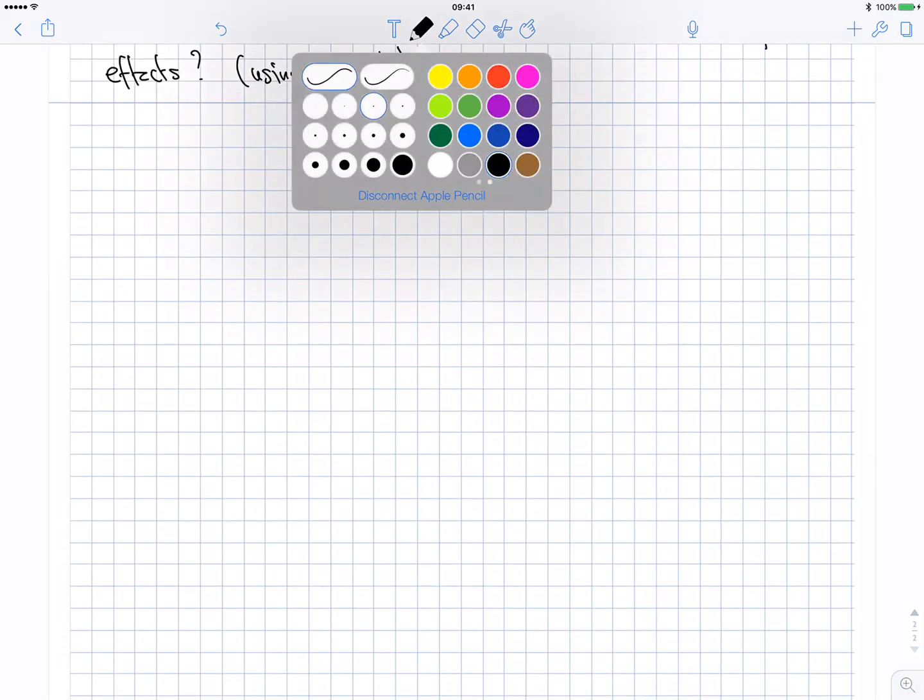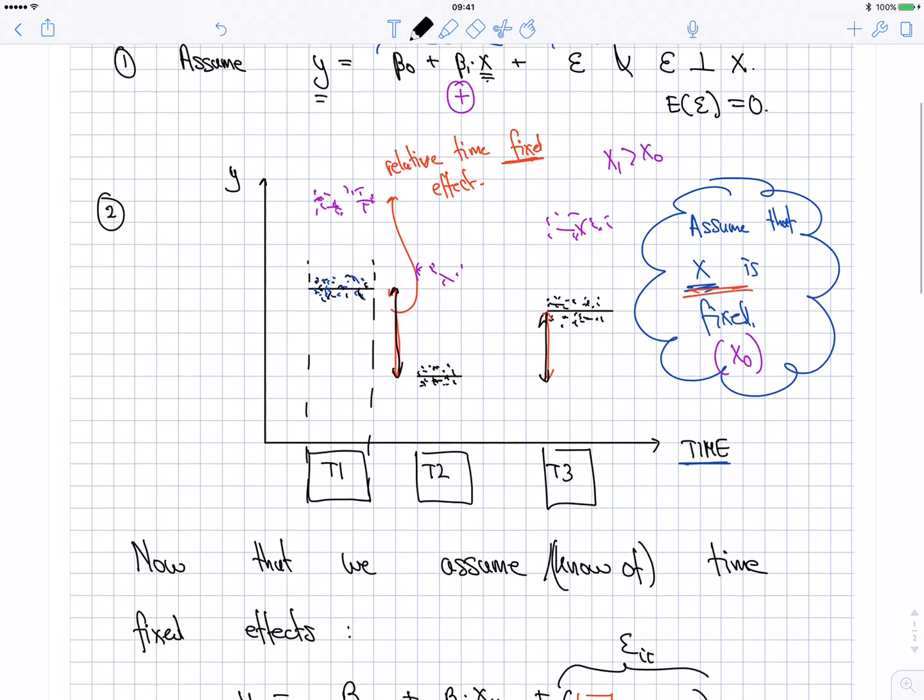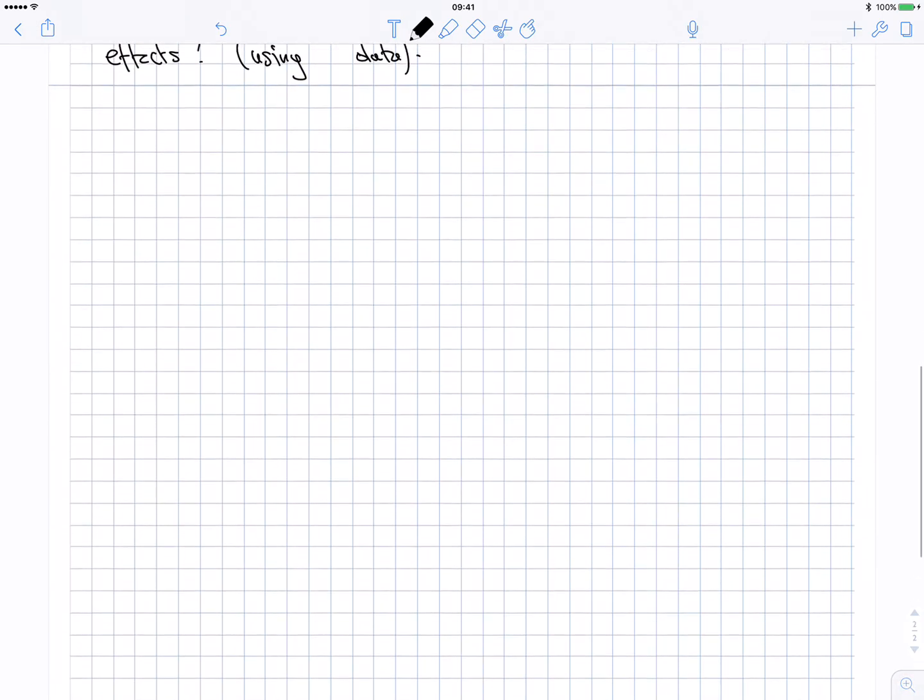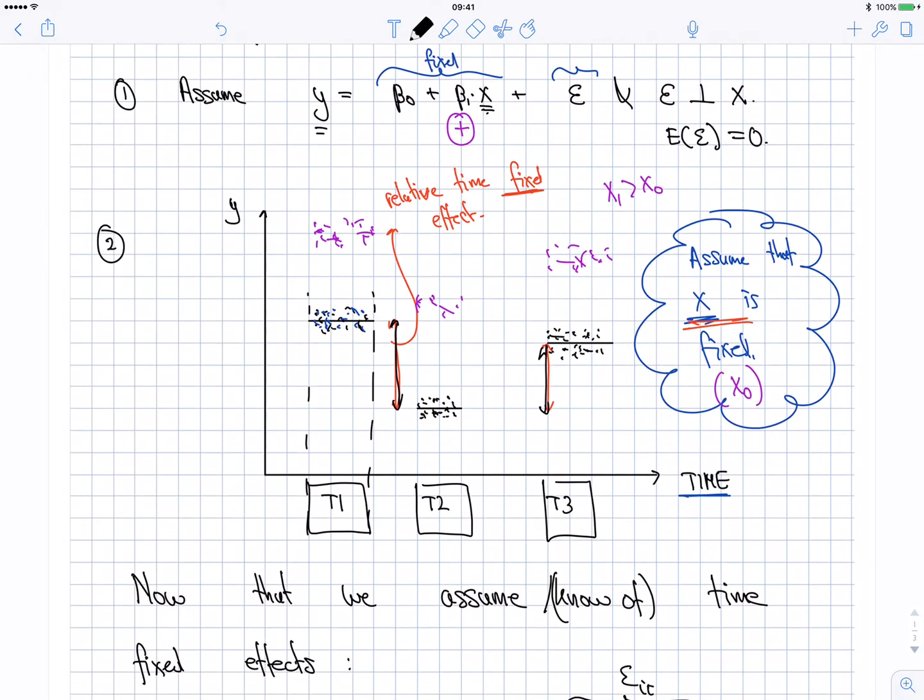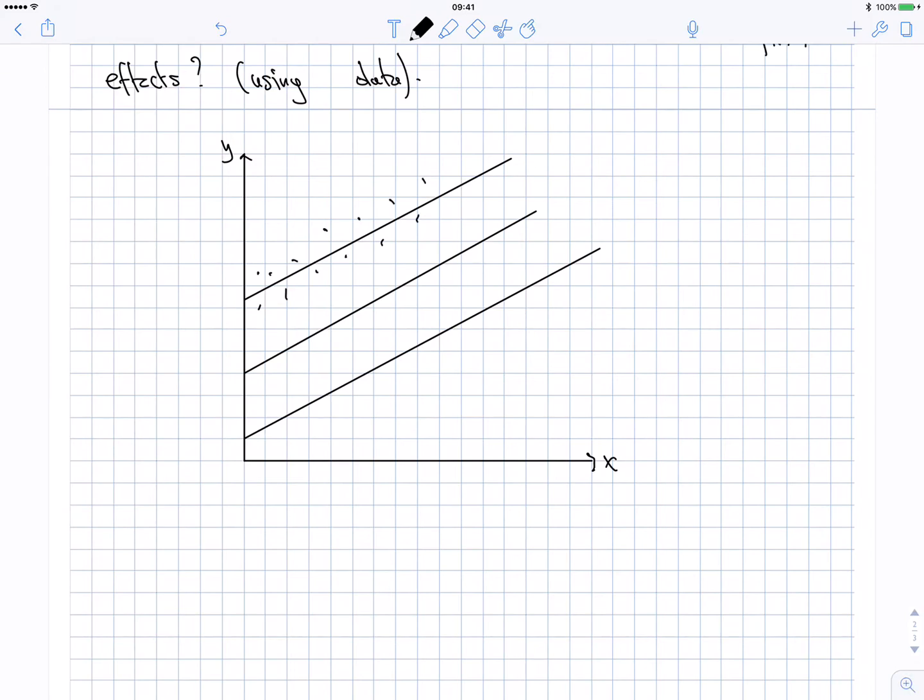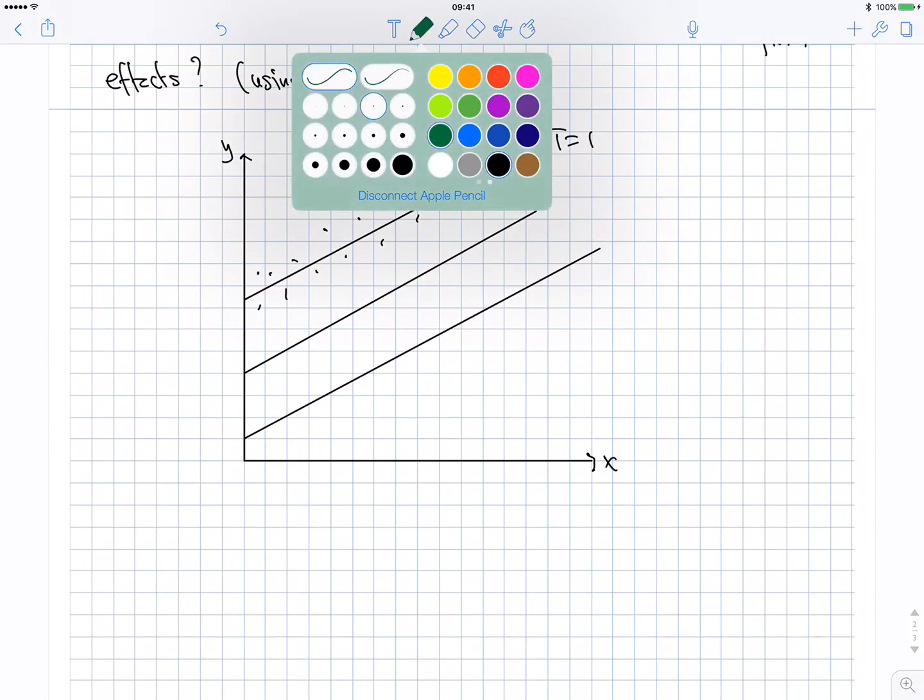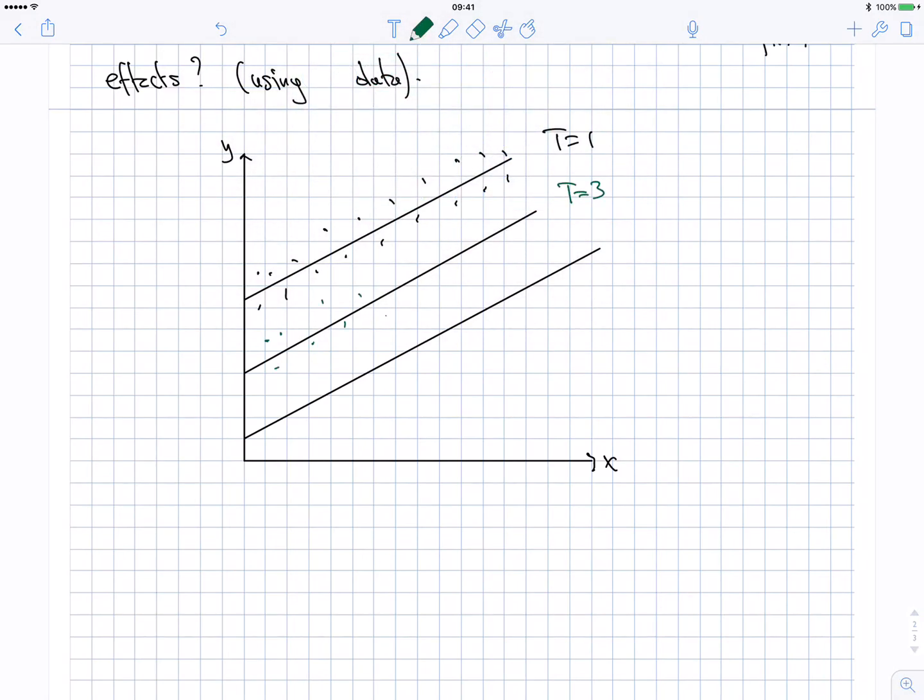Well, for any given level of x, which time period has the highest y? T1, of course. So if I were to group my observation, so now I switch to the y and x graph. But now if I group my observation, the data with the highest y, which is t1, will all be here. So this will be my t is equal to 1. My data at t is equal to 3 will kind of be here. And my data at 2 would be somewhere here. How can I estimate the time-fixed effects?